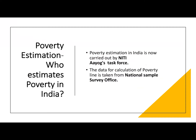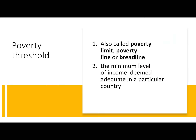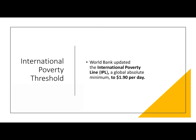Who estimates poverty in India? Presently, it is Niti Aayog's task force. Earlier, it used to be the Planning Commission. The data to estimate poverty is taken from the National Sample Survey Office (NSSO). The poverty threshold, also called the poverty line or bread line, is the minimum income deemed adequate in a particular country and set of circumstances. The international poverty line is defined by the World Bank at $1.90 per day — this figure is important.